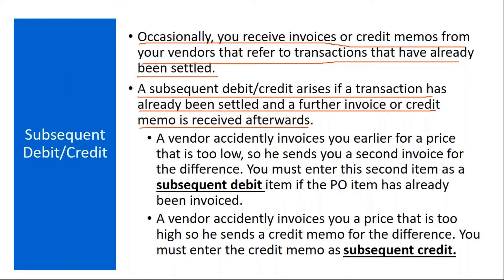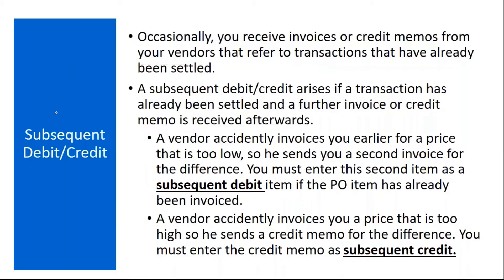Let's say you created a purchase order and gave it to the vendor. You received the material, then you received the invoice copy, you did the invoice entry — all settled. After that, the vendor realizes either he was paid less or we paid more to him. To settle those discrepancies, we use subsequent debit or subsequent credit. For subsequent debit: a vendor accidentally invoices you earlier for a price that is too low, so he sends you a second invoice for the difference. You must enter the second item as a subsequent debit item if the PO item has already been invoiced.